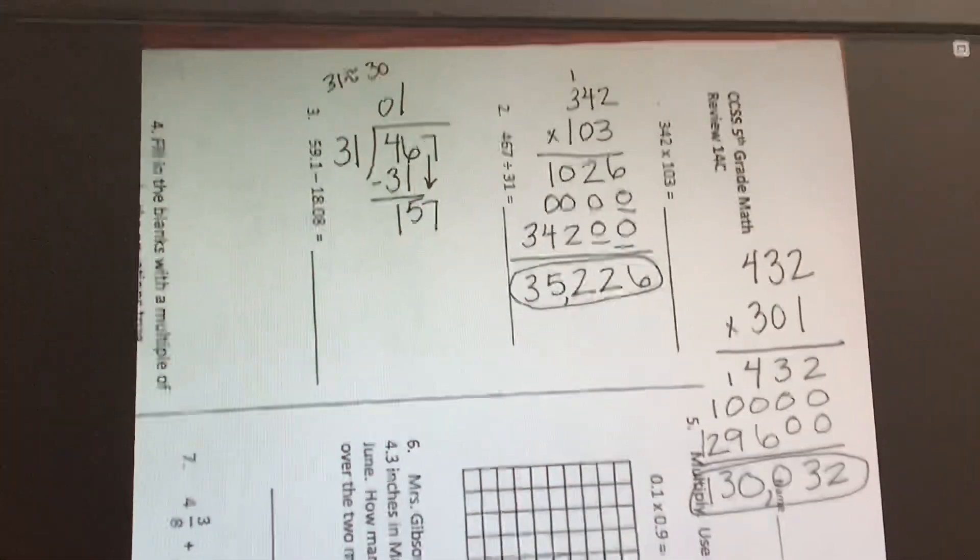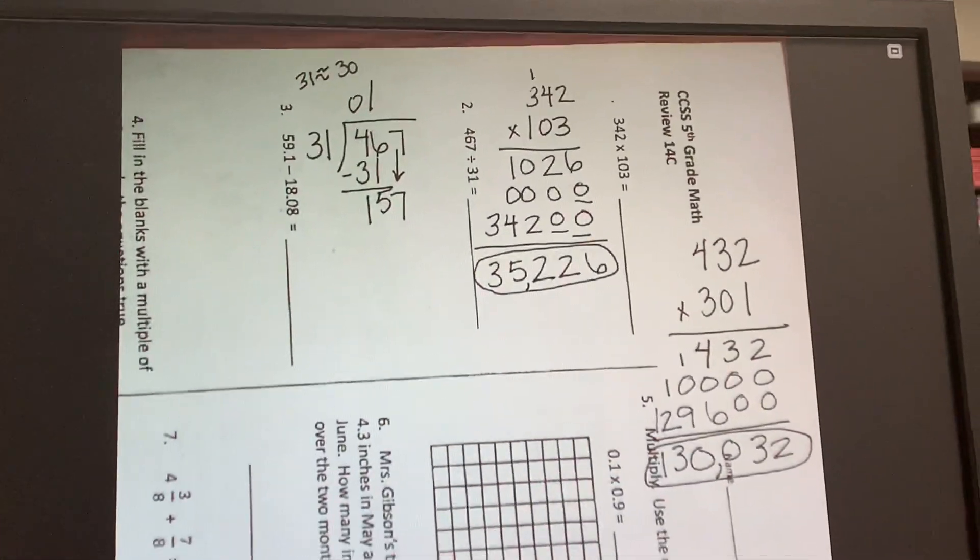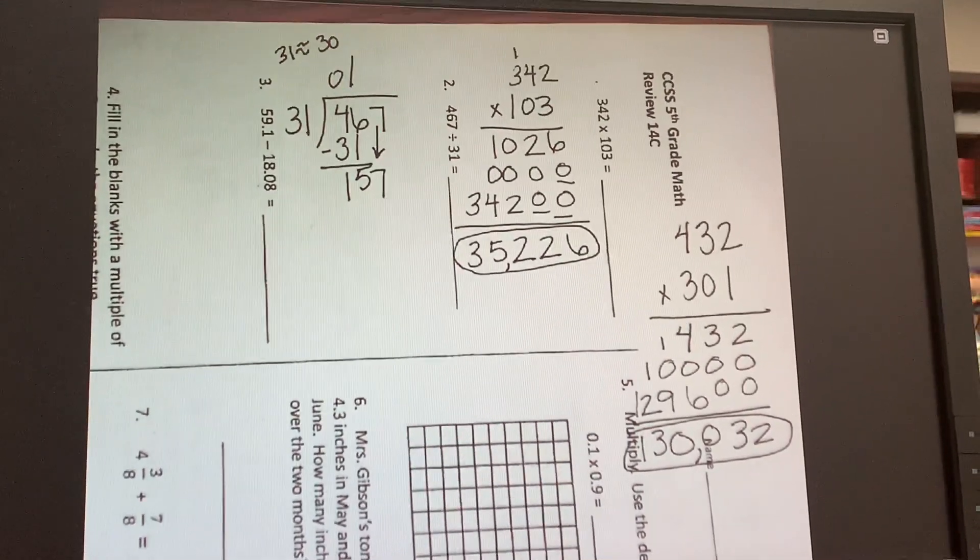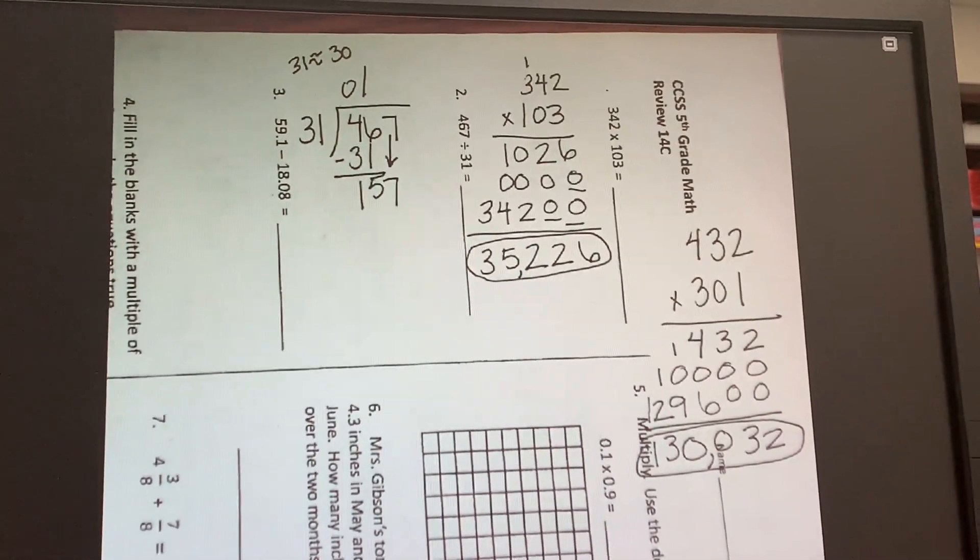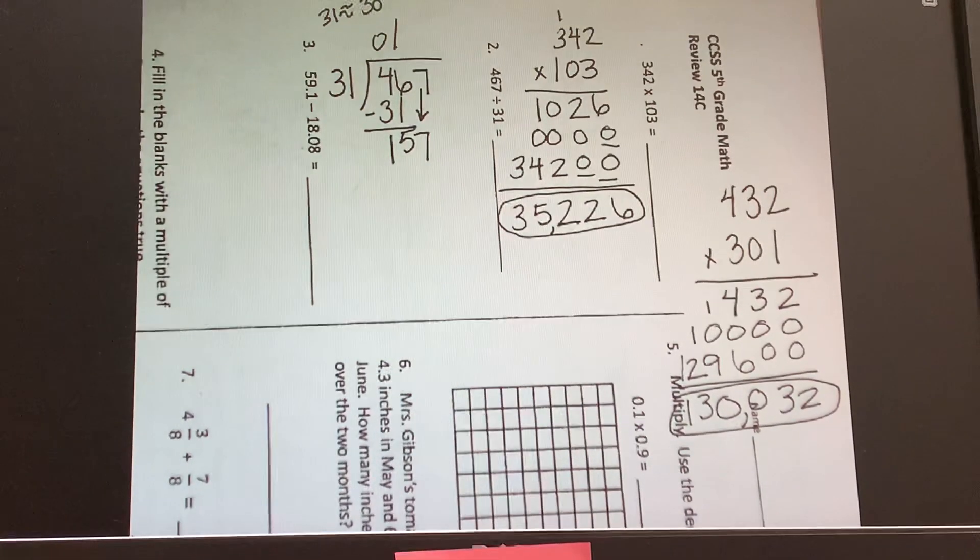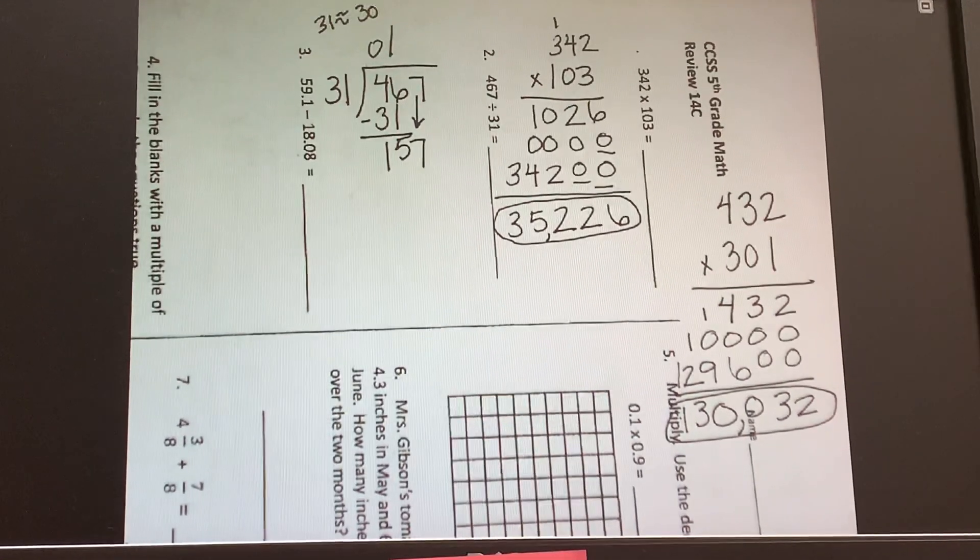To get close from 31 to 157. So Isabella, what times 31 do you think would get as close? Five. Alright, why did you choose five? Did you use 30 in your thinking? No.